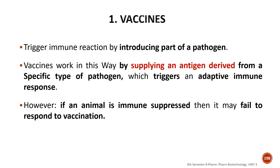There are two types of immunity: active immunity and passive immunity. Artificially acquired active immunity is an immunostimulant.